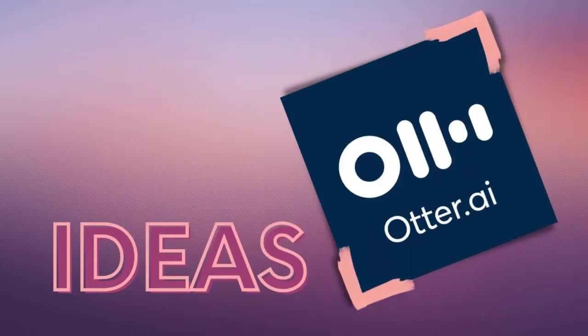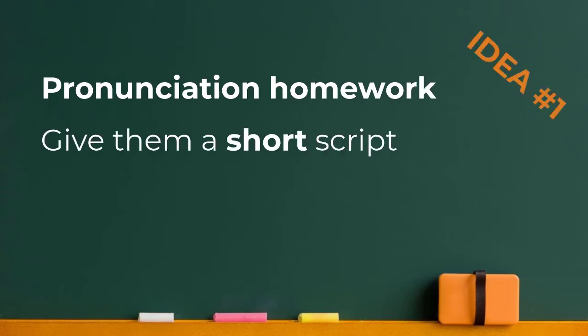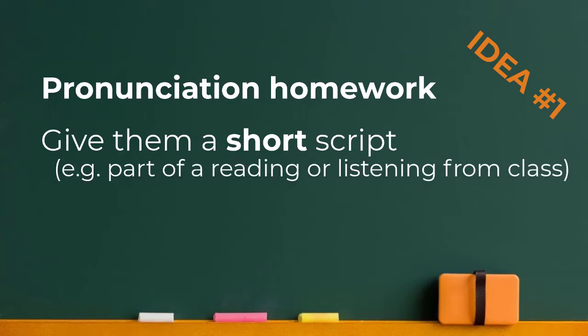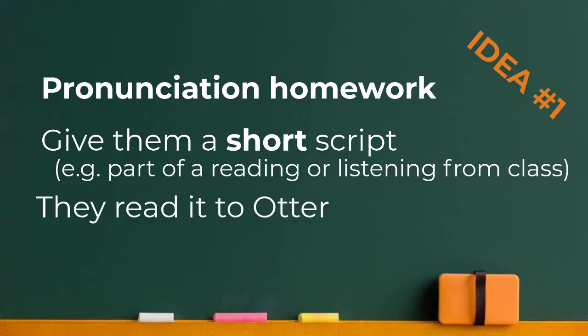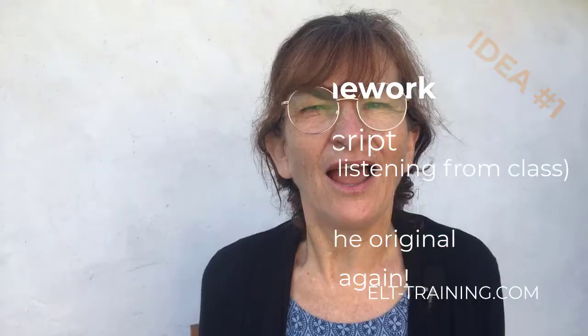So how is this helpful for learners? Here are a few ideas. Pronunciation practice — you could use it for pronunciation homework. Give your learners a script, make sure they understand it. It could even be a reading text or a listening transcript from the class that you've already done, and tell them to read it aloud to Otter and compare what it hears to what they think they said. They can compare the dictated results to the original and try again as often as they like. I think this is a great way to encourage autonomous pronunciation practice, and you can reassure them that Otter doesn't get everything right even with standard accents.